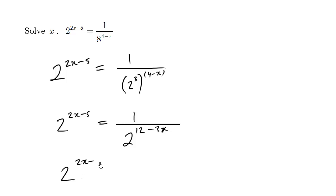So 2 to the 2x minus 5 equals 2 to the negative 12 minus 3x. So I'm just copying this down here, but sticking a negative sign there. And it's very important that you have these brackets, otherwise it'll be wrong.